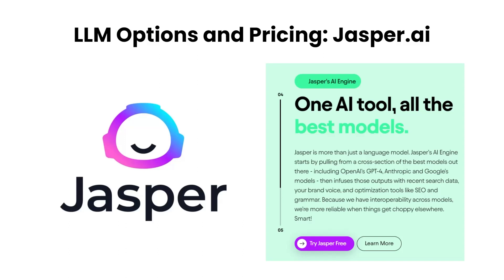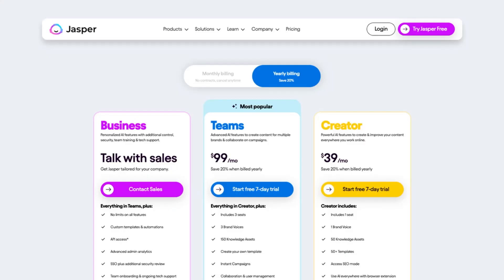One thing you'll find when looking at alternatives to ChatGPT is that a lot of them actually use ChatGPT anyway. For example, Jasper is another service that pulls responses from GPT-4 in addition to some other tools to build its own responses, and then tries to match it to your tone and branding. Jasper also provides art generation, template and style uploads, and more. Their pricing ranges from $40 to $100 or more per month, billed annually.